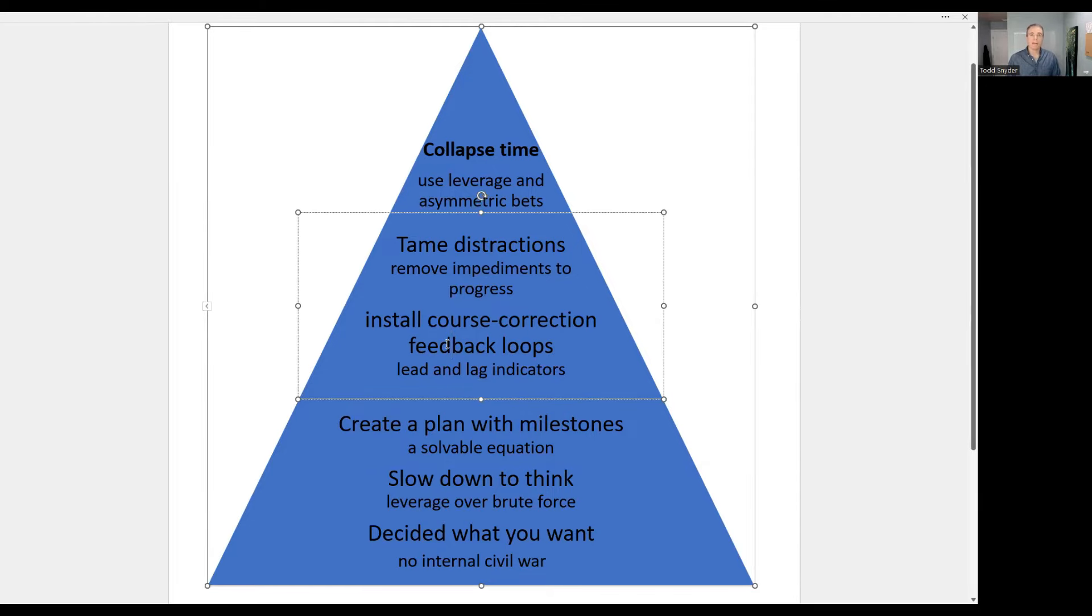So why do I call that a course correction feedback loop? Because without this, I find the entrepreneurs wander from one goal to the next, and they don't build up the speed that can come from the power of compounding. If you're splitting your attention 16 ways, then you never finish the one thing.